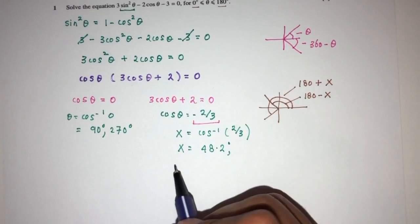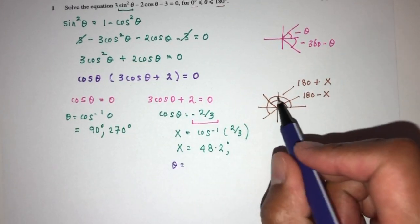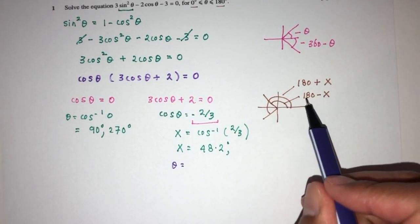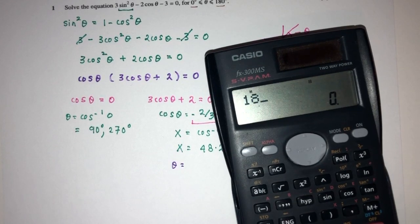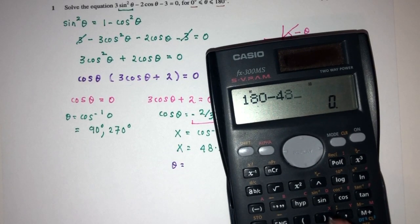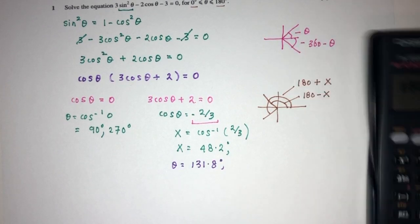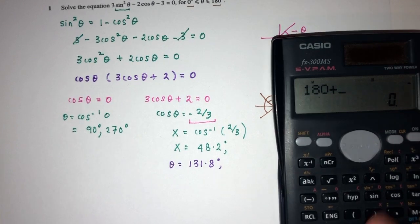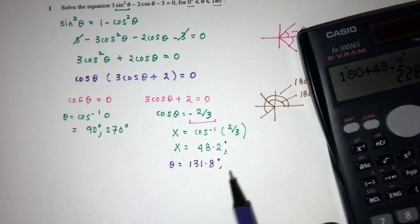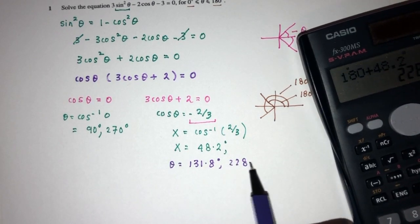However, here we need the value of theta. Theta will be according to the quadrants. As you can see, the first one is 180 minus x, minus 48.2, that should be 131.8. And it can be 180 plus 48.2, that should be 228.2.